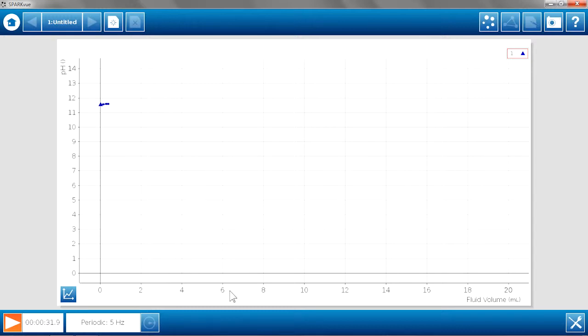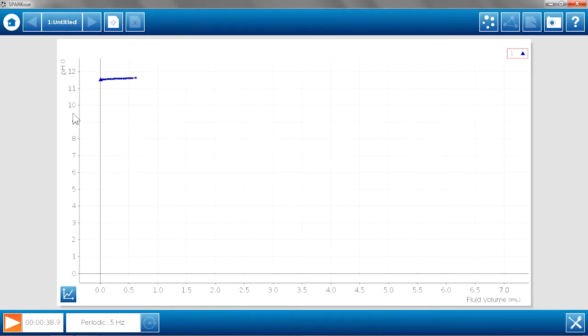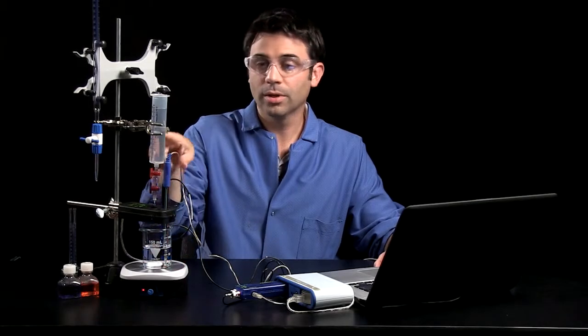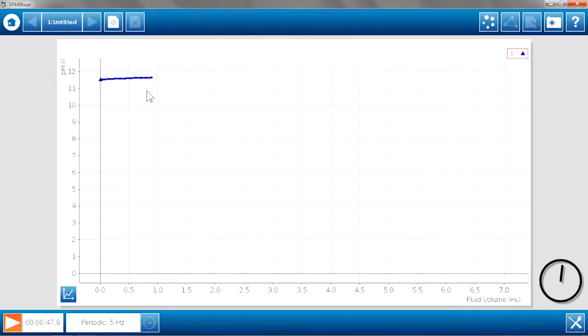And I'm going to rescale my graph a little bit. Here's my initial pH very high because I'm titrating sodium hydroxide with hydrochloric acid. And we'll let this go and see how the titration curve looks.